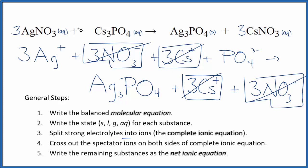What's left, that's the net ionic equation for AgNO3 plus Cs3PO4. I'll clean it up, write the states, and we'll have our net ionic equation.